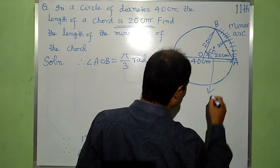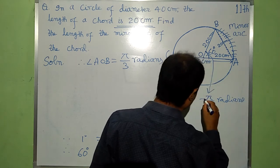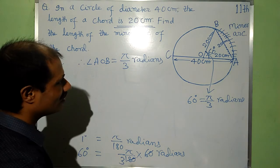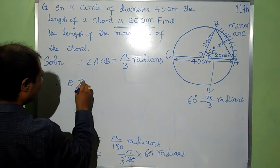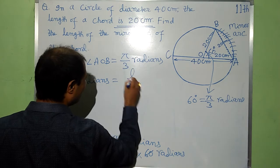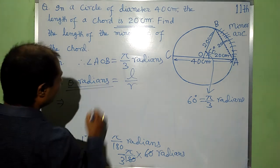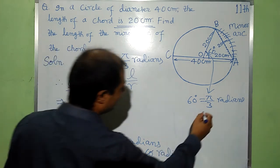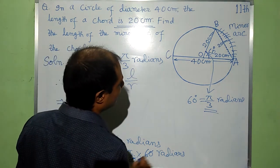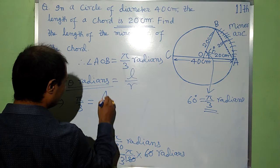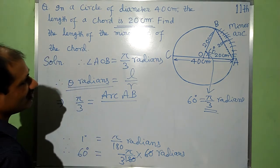Now this angle is pi by 3 radians, that is 60 degree. It is changed into radians, hence theta radians is equal to L by R. With help of this formula, theta radians, this is given, this angle is given in radians, that is pi by 3. Pi by 3 is equal to L, that is arc AB, by R, that is 20 centimeters.